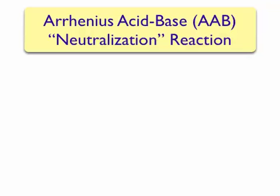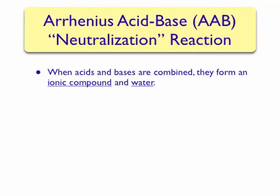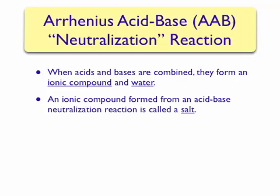Arrhenius also describes a type of reaction that occurs between an acid and a base, called a neutralization reaction. In a neutralization reaction, an acid and a base are combined to form a solution that is neither acidic nor basic. When acids and bases are combined, they form an ionic compound and water as products. Any ionic compound that can be formed from an acid-base neutralization reaction is called a salt. Table salt, sodium chloride, is one example of a compound that can be formed through an acid-base neutralization reaction.